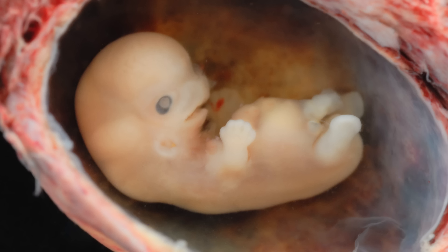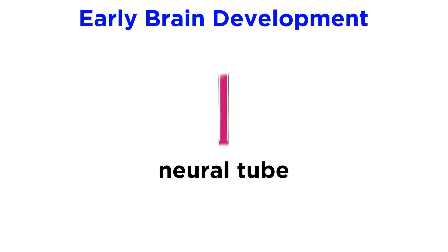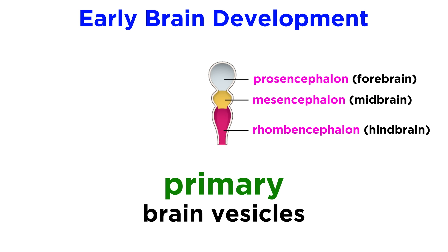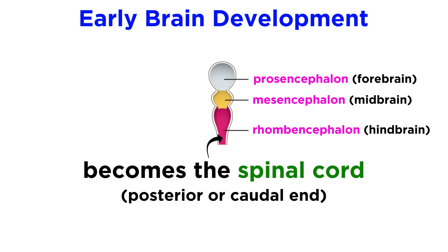The best way to approach learning the structure of the brain is to examine early brain development. Within an embryo, the brain and spinal cord begin as a single neural tube. The anterior or rostral end begins to expand and constrictions soon demarcate the three primary brain vesicles. These are the prosencephalon or forebrain, the mesencephalon or midbrain, and rhombencephalon or hindbrain. The posterior or caudal end of the neural tube will eventually become the spinal cord, which we will discuss later.